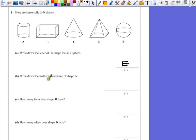Part B. Write down the mathematical name for shape A. It looks like a tin. It's got a circle at the bottom, a circle at the top. And the mathematical name for that is a cylinder, which is spelt C-Y-L-I-N-D-E-R.